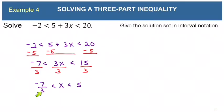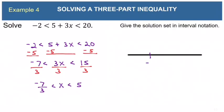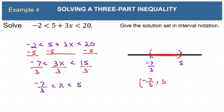We read this as negative 7 thirds is less than x, which is less than 5 — x is stuck between negative 7 thirds and 5. We have two numbers on our number line and x is between them. Both use the less-than symbol with no or-equal-to bar, so both get parentheses. The solution is the interval from negative 7 thirds to 5.